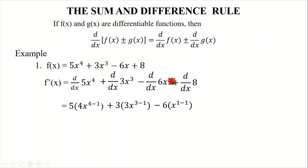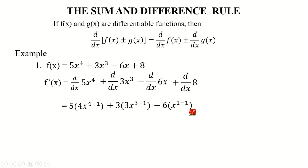You can also use the power rule for 6x since it has a power of 1. Subtracting 1 from the power gives 1 minus 1 = 0, so it becomes x⁰. Recalling the zero exponent law, any number or variable raised to 0 is equal to 1, so the answer is still 6 times 1 = 6. Then the derivative of a constant is always 0.